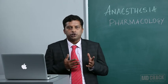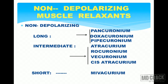Moving to non-depolarizing muscle relaxants: in the context of general anesthesia with controlled respiration, after pre-oxygenation and induction with a depolarizing muscle relaxant like succinylcholine to intubate the patient, after 3 to 5 minutes when the patient comes out of succinylcholine, it is the time to administer a non-depolarizing muscle relaxant.